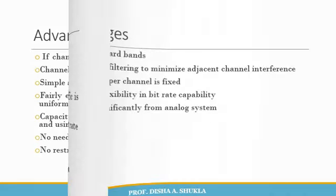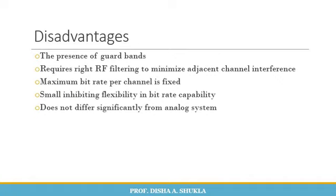Moving on to the disadvantages: the presence of guard bands causes certain frequency bandwidth to be wasted, since guard band frequencies are unused. It requires high RF filtering to minimize adjacent channel interference. The maximum bit rate per channel is fixed in FDMA, offering small inherent flexibility in bit rate capability, and it does not differ significantly from analog systems.